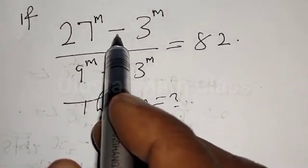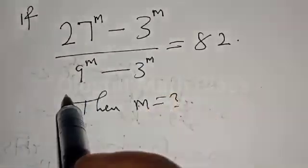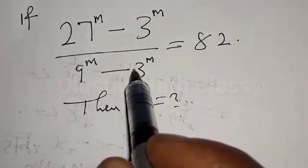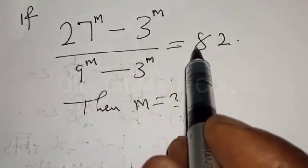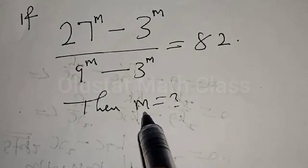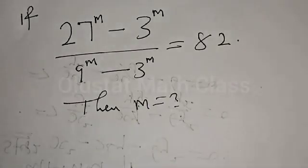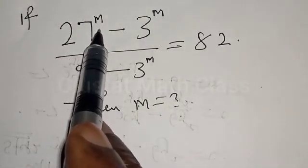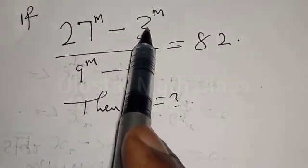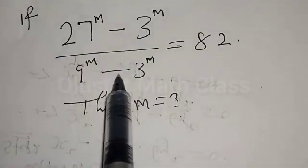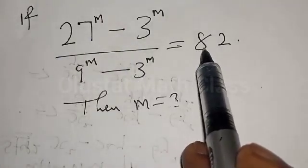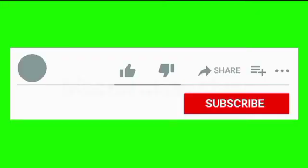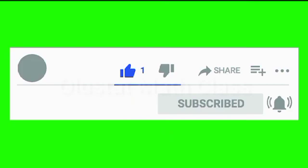If 27 raised to power m minus 3 raised to power m, over 9 raised to power m minus 3 raised to power m, is equal to 82, then m is equal to what? Hi everyone, welcome to my class. In this class we want to find the value of m from this given equation. Before we proceed, please don't forget to like, share, comment and subscribe.